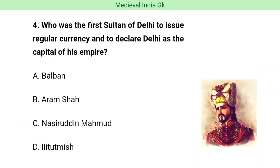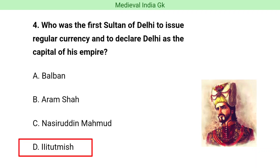Question number four. Who was the first Sultan of Delhi to issue regular currency and to declare Delhi as the capital of his empire? The correct answer is option D, i.e. Iltutmish.